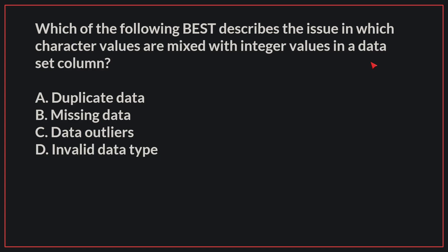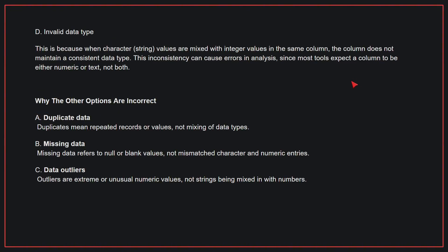Which of the following best describes the issue in which character values are mixed with integer values in a dataset column? The correct answer is D: Invalid data type. This is because when character values are mixed with integer values in the same column, the column does not maintain a consistent data type. This inconsistency can cause errors in analysis, since most tools expect the column to be either numeric or text, not both.